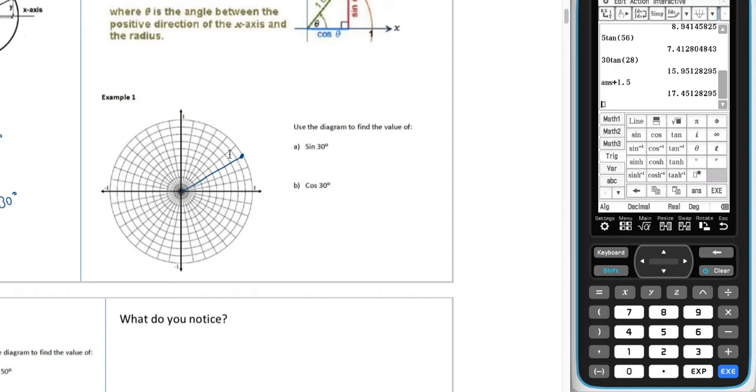And the dot represents where it hits the circumference of the circle. Now, we can draw a line straight down. And that represents our x-coordinate. And we can draw a line straight across. Now, the more accurately you draw these lines, the better it will go. So here, I'm just using sort of my guesstimate.